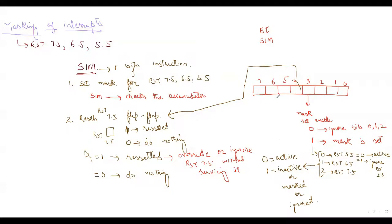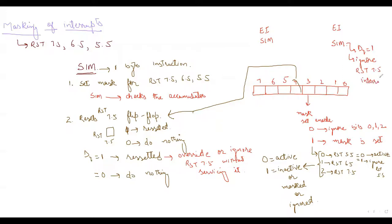This reset is used to override or ignore RST 7.5 without servicing it. For example, if EI instruction has been used and D4 bit in the accumulator is 1 when SIM executes, the processor will ignore RST 7.5. This is another method of ignoring RST 7.5 in addition to the mask bits.